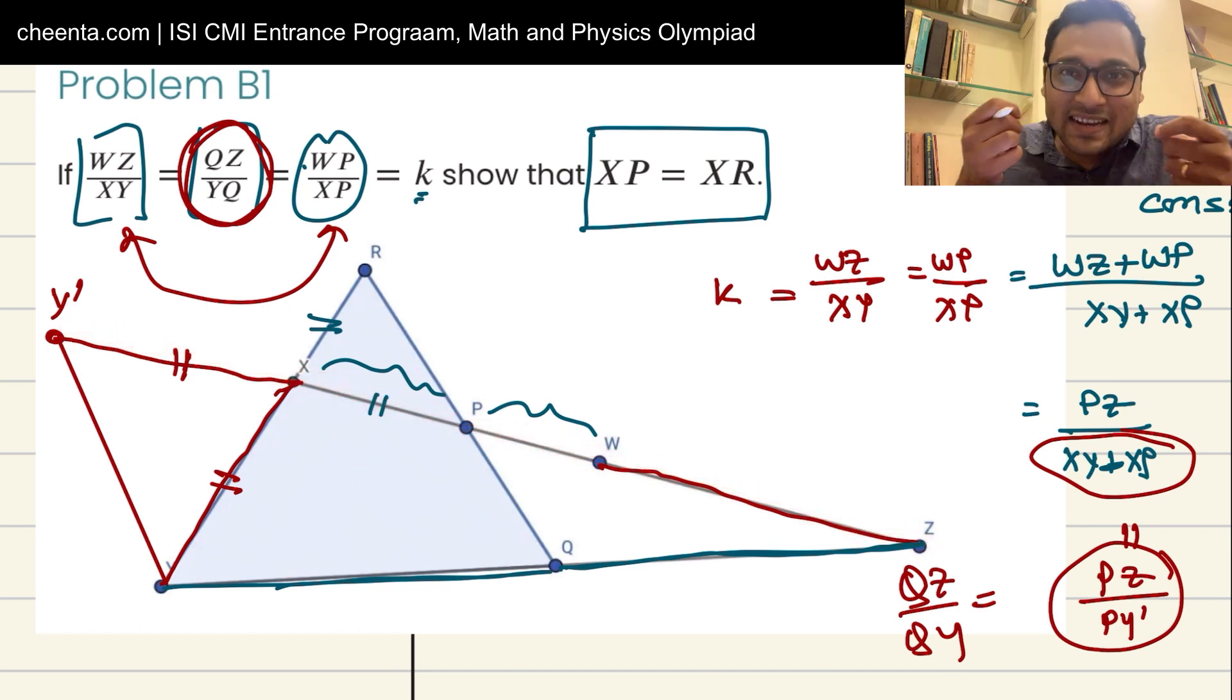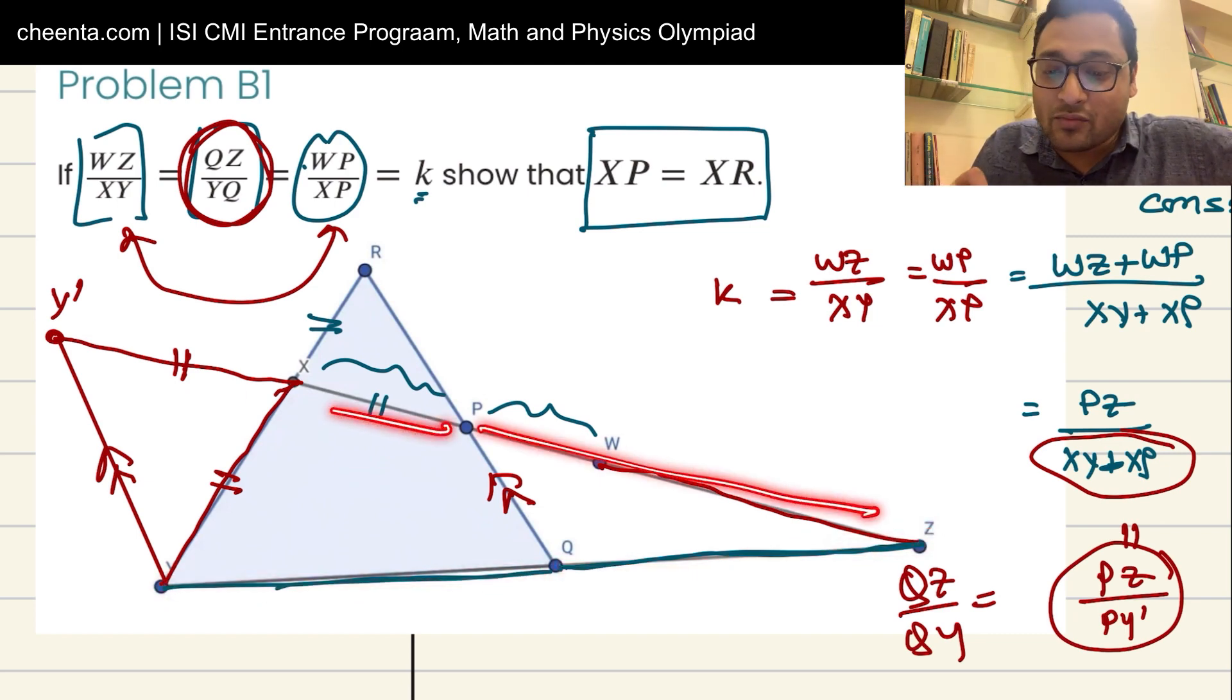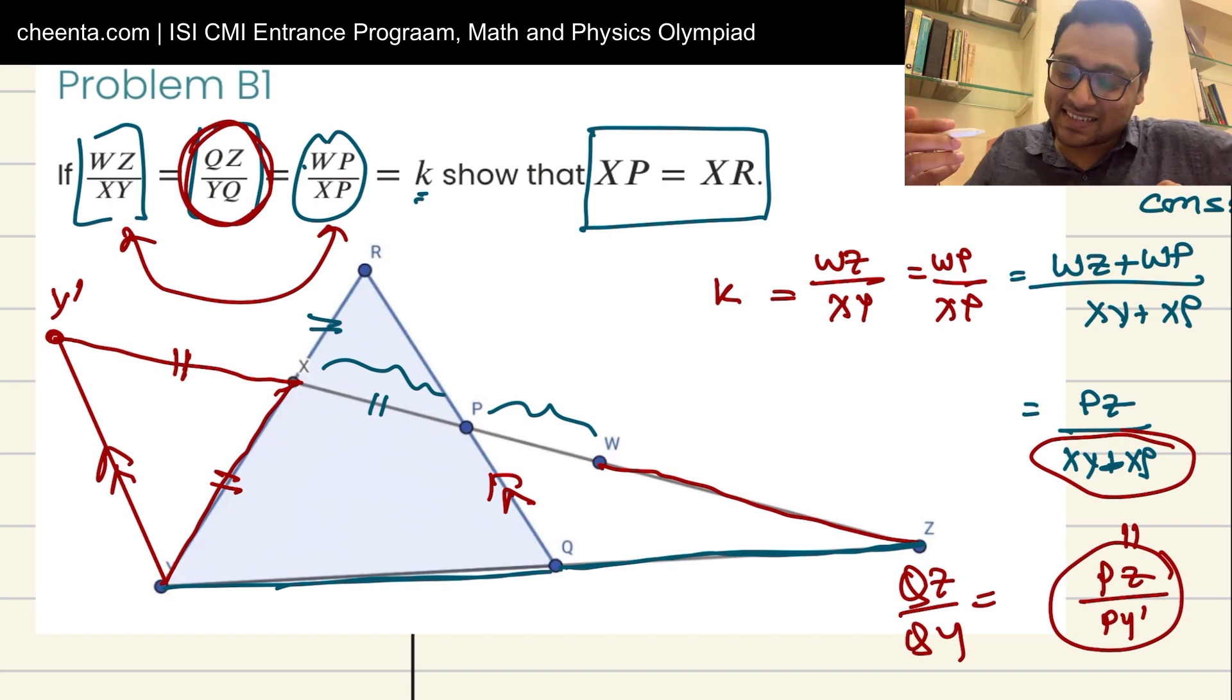You immediately know that these two are parallel lines. Look at this one more time. QZ by QY is equal to PZ by PY prime. So of course, since these two lines split the segments in the same ratio, therefore they are parallel to each other.